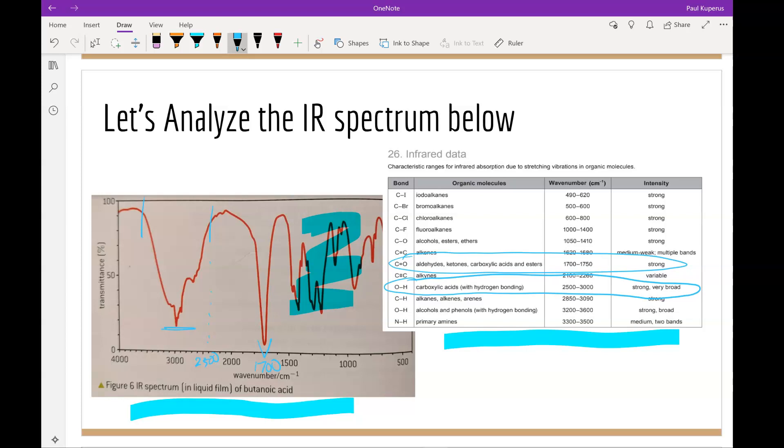It could also correspond with possibly an alcohol, but the peak would start a little bit later. And so from this, we can see that we have a carboxylic acid. It doesn't tell me anything else about the molecule, but it does tell me that I have a carboxylic acid, which is true about butanoic acid.